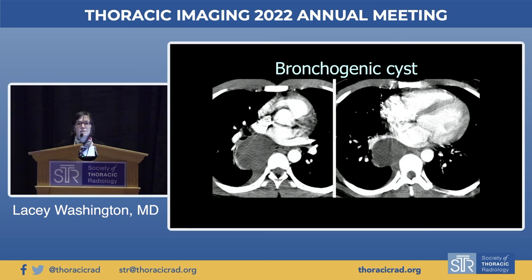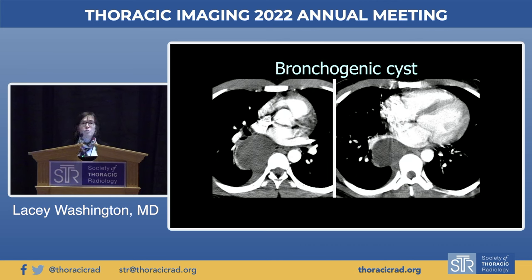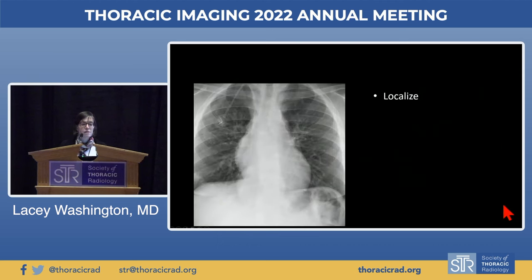On the lateral, this is a more middle mediastinal lesion — a pretty classic location and appearance for a large bronchogenic cyst. Unlike pericardial cysts, these don't have to be of pure water attenuation; they can be proteinaceous, but they should not enhance with contrast.